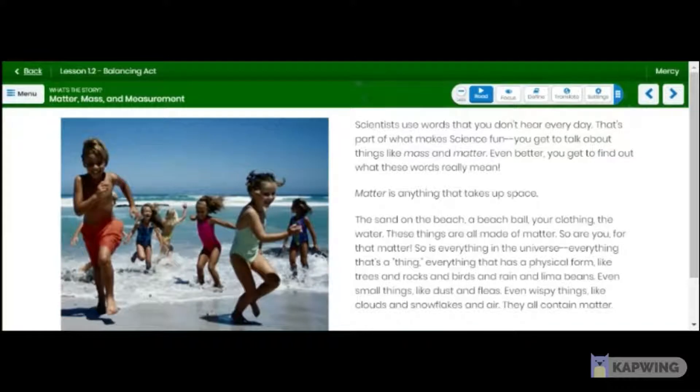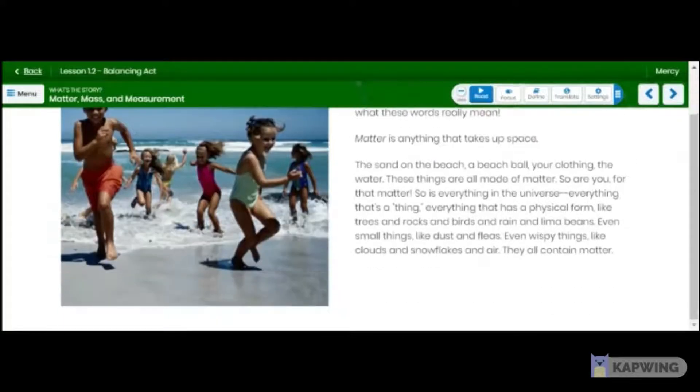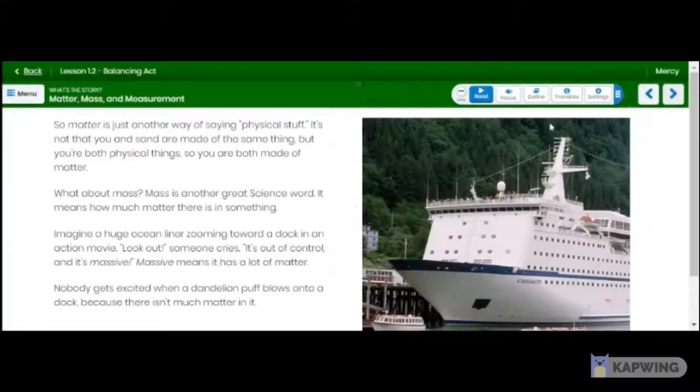So now, scientists use words that you don't hear every day. That's part of what makes science fun. You get to talk about things like mass and matter. Even better, you get to find out what these words really mean. So matter is anything that takes up space. The sand on the beach. A beach ball. Your clothing. The water. These things are all made of matter. So are you. For that matter, so is everything in the universe. Everything that's a thing. Everything that has a physical form, like trees and rocks and birds and rain and lima beans. And even small things, like dust and fleas. Even wispy things, like clouds and snowflakes and air. They all contain matter.